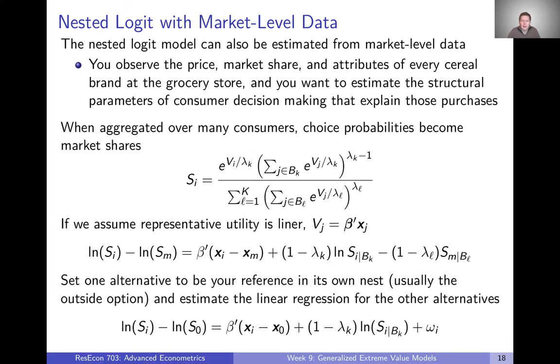All right, another thing that you might run across as you are actually trying to estimate a nested logit model is a lot of times you'll see both logit and the nested logit model estimated using market level data. Everything we described so far is assuming that you have micro or individual level data, but sometimes you just have market level data. So a classic example of this is that you observe the price, market share, and attributes of every cereal brand at a grocery store, and you want to estimate the structural parameters of consumer decision making that explain those purchases. You want to understand how consumers are choosing among these hundreds of different cereals out there.